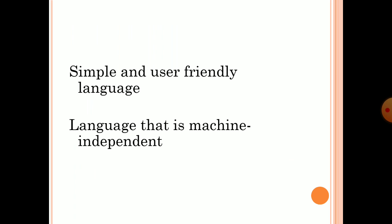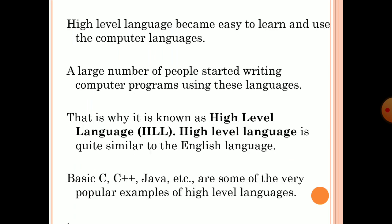3rd Generation computers used simple and user-friendly language — a language that is machine independent. High Level Language becomes easy to learn and use. A large number of people started writing computer programs using these languages. That is why it is known as High Level Language, HLL.